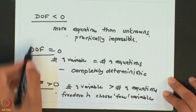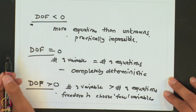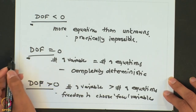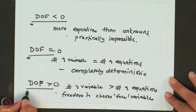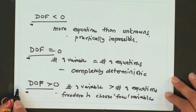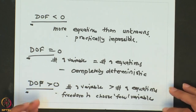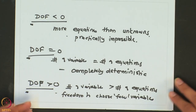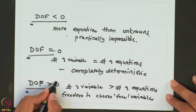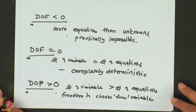A degree of freedom less than 0 is practically impossible. A degree of freedom of 0 tells us there is no way to manipulate the process. So only when the degree of freedom is greater than 0 can the process be manipulated — and we know from control theory that we must be able to manipulate the process. Therefore, degree of freedom greater than 0 is a requirement when we talk about any process control. Coming back to the example, with degree of freedom 2, this process can be controlled.